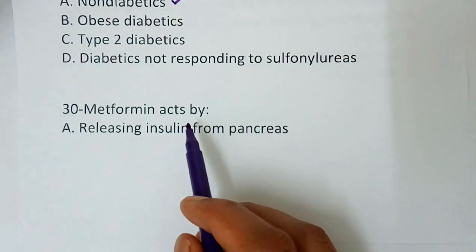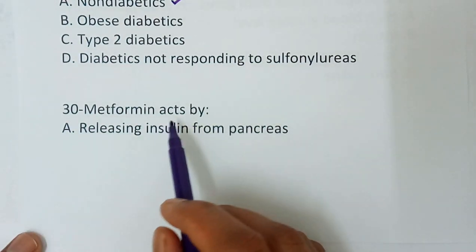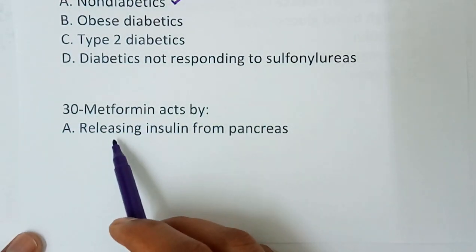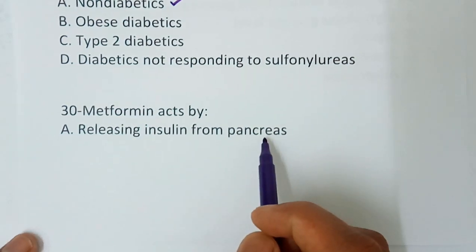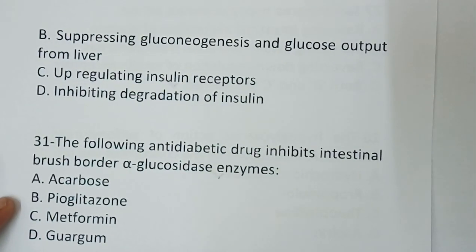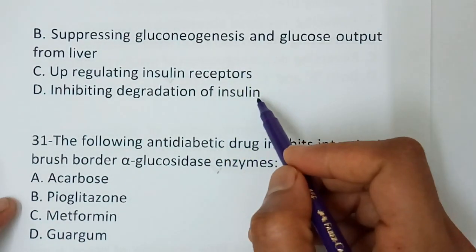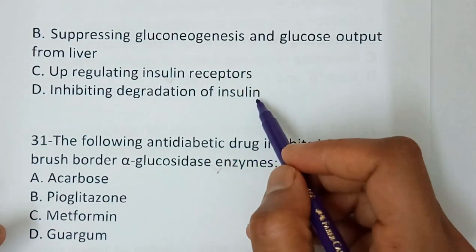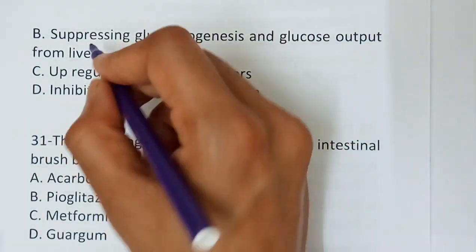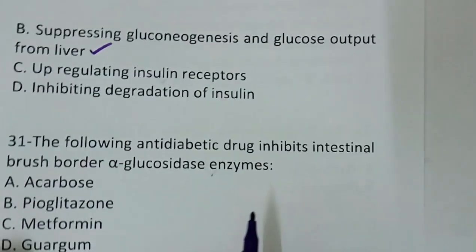Question number 30 — metformin acts by: option A, releasing insulin from the pancreas; option B, suppressing gluconeogenesis and glucose output from the liver; option C, upregulating insulin receptors; option D, inhibiting degradation of insulin. The correct answer is option B — suppressing gluconeogenesis and glucose output from the liver. That is the mechanism of action of metformin.